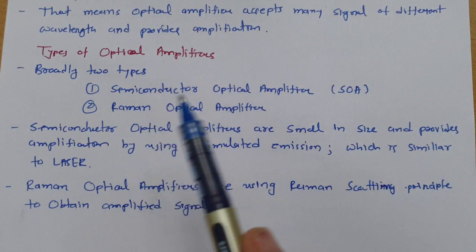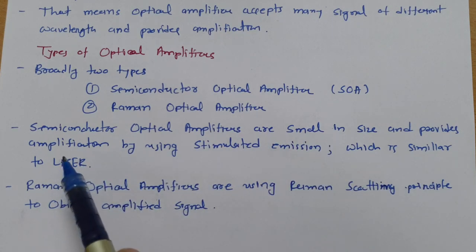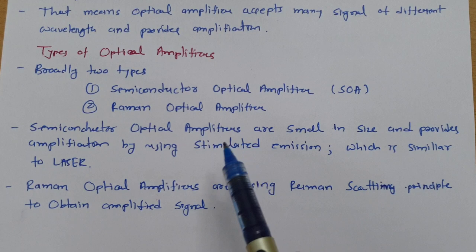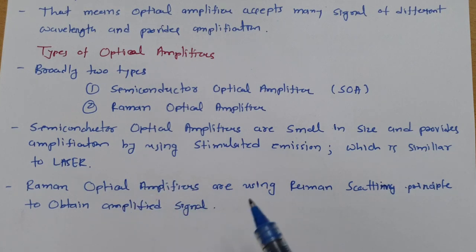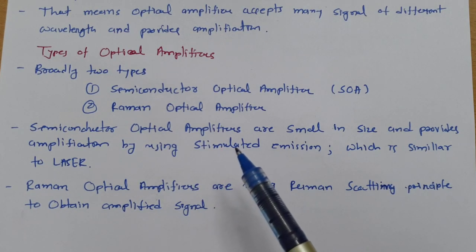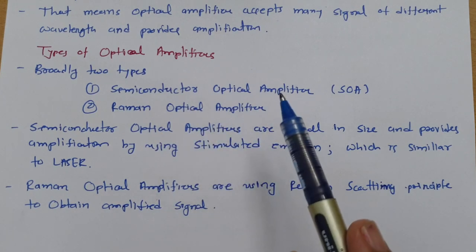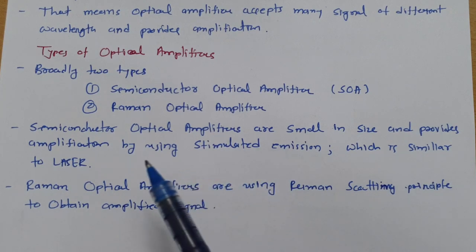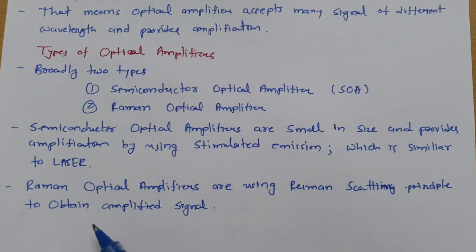I have made a separate session for both types in detail, but here I will explain the basics of each. Semiconductor Optical Amplifiers are small in size and give amplification by using stimulated emission, which is similar to a laser. Raman Optical Amplifiers use the phenomenon of Raman scattering to achieve amplification of the signal.